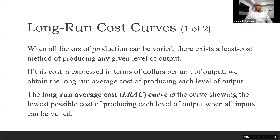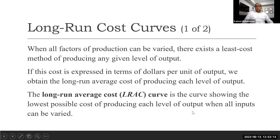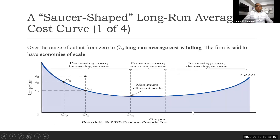By dividing total cost by the number of units we get average cost, and in the long run we refer to the long run average total cost curve. If we plot a curve for the long run average cost of producing various levels of output, we get a curve which is saucer-shaped — and we can see that shape here.